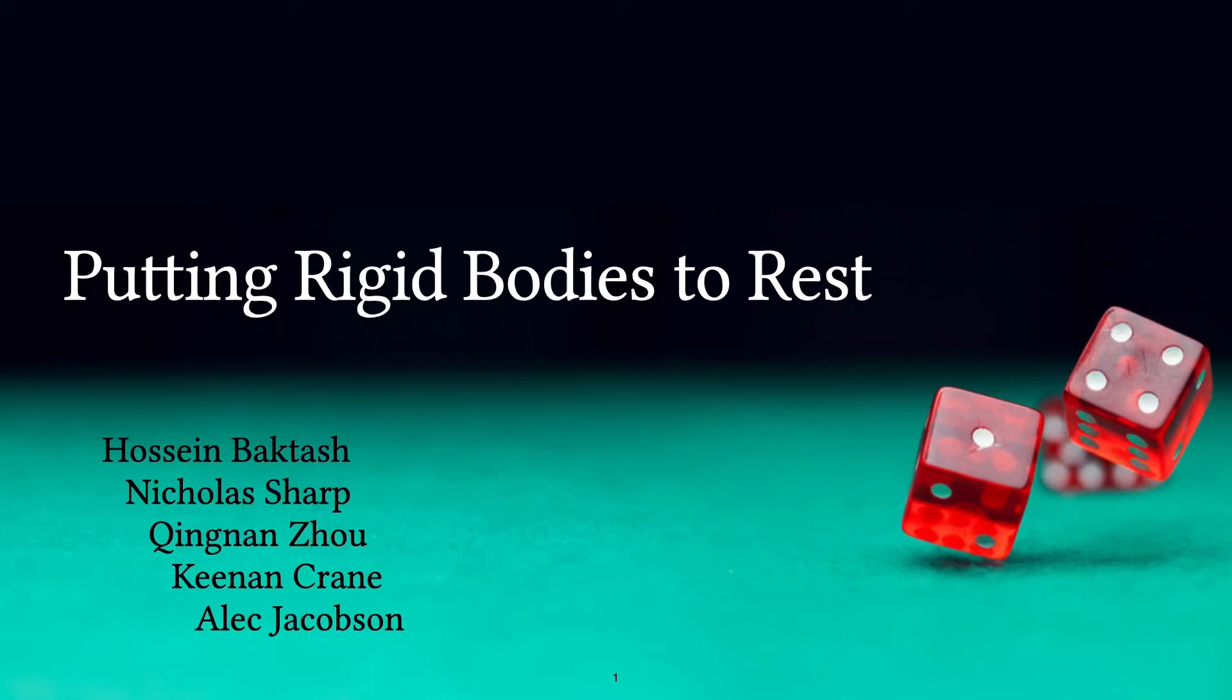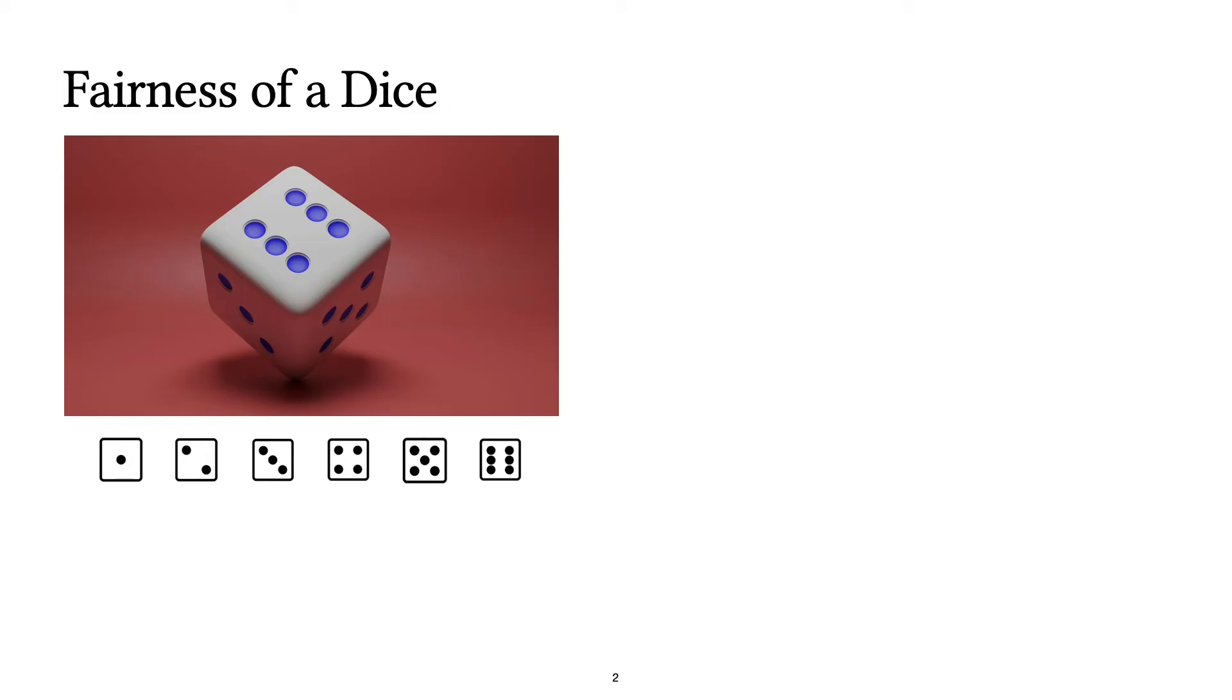Hi, in this work we analyze how rigid objects fall and rest on the ground. Consider a fair six-sided dice. How do you know that each of its sides have equal probabilities?